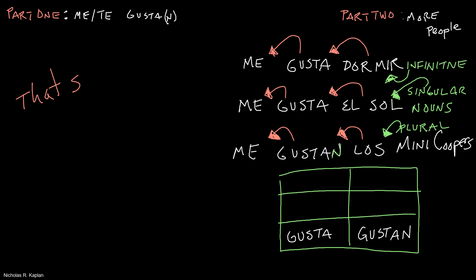But we can expand this. We could say, we like to sleep. We will add indirect object pronouns: me, te, le, nos, os, les.